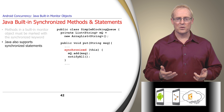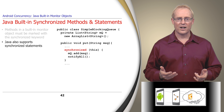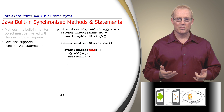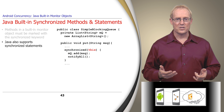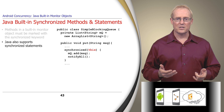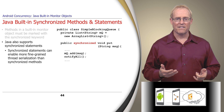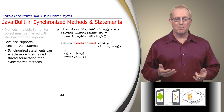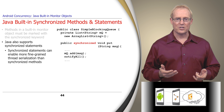Java also supports synchronized statements, often called synchronized blocks, which acquire and release a lock within the scope of a statement. In the synchronized statement example on this slide, the lock is a Simple Blocking Queue object itself, which is the intrinsic lock associated with every Java object. Although programming synchronized blocks requires more effort than programming synchronized methods, they can enhance concurrency by enabling fine-grained serialization that minimizes the scope over which locks are held.